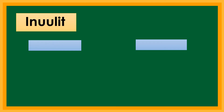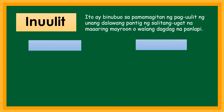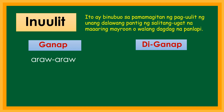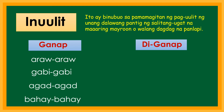Dumako naman tayo sa inuulit. Ano ba ang inuulit? Ang inuulit ay binubuo sa pamamagitan ng pag-uulit ng unang dalawang pantig ng salitang ugat, na maaaring mayroon o walang dagdag na panlapi. May dalawang uri ng inuulit: ganap at di-ganap. Ang ganap — buong salita ang inuulit. Halimbawa: araw-araw, gabi-gabi, agad-agad, bahay-bahay.